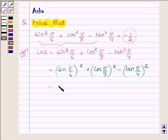sin π upon 6 is sin 30 degree, plus cos π by 3 is cos 60 degree whole square minus tan π by 4 is tan 45 degree whole square.